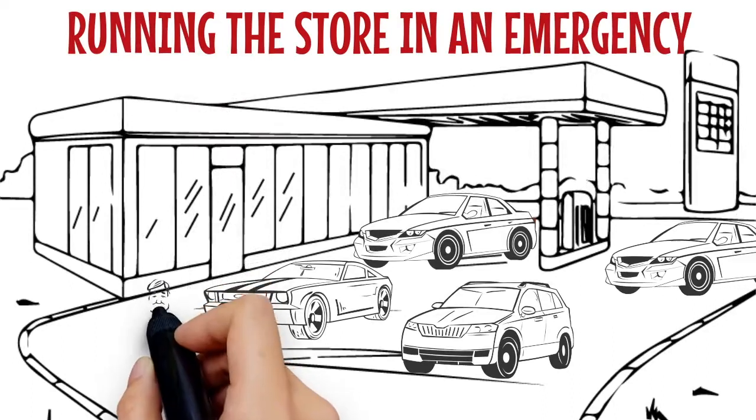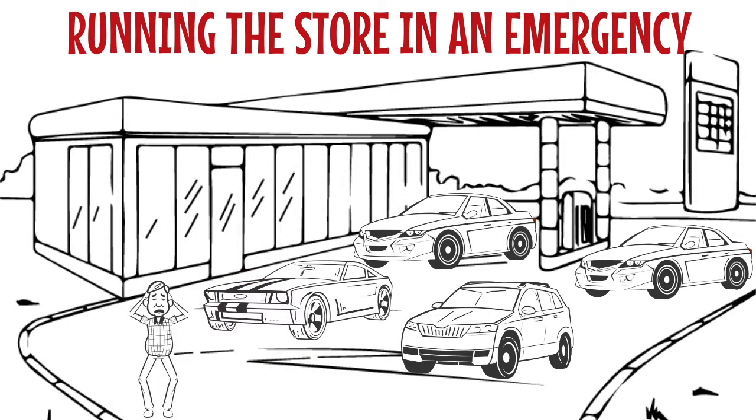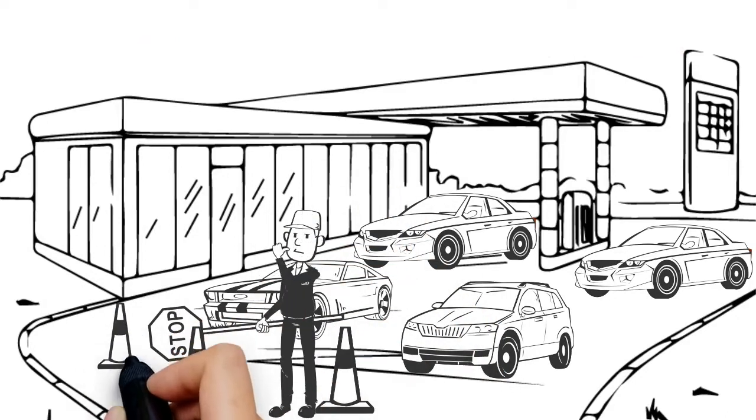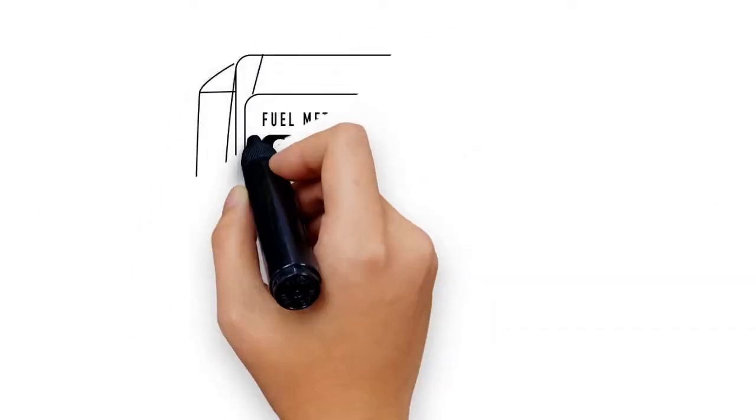In an emergency, fuel demand is likely to be high and the atmosphere intense. When a line of vehicles forms, an employee in a safety vest should walk the line to tell drivers about the fuel supply. Watch your fuel inventories.